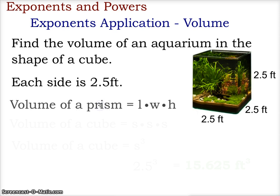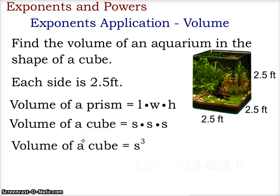Typically, we're going to look at the volume of a prism as length times width times height. But since this is a cube, all three sides are equal. So it's side times side times side. And using an exponent, that becomes side cubed, or s to the third power.